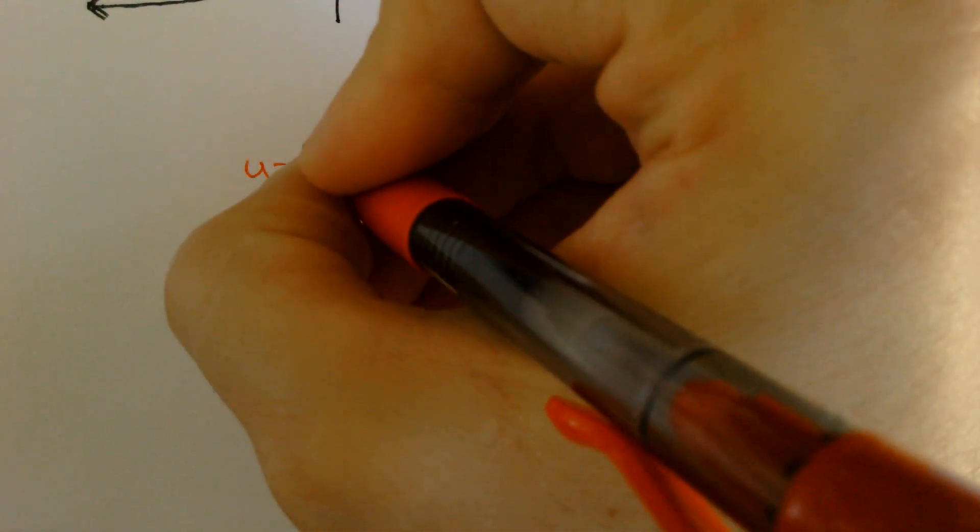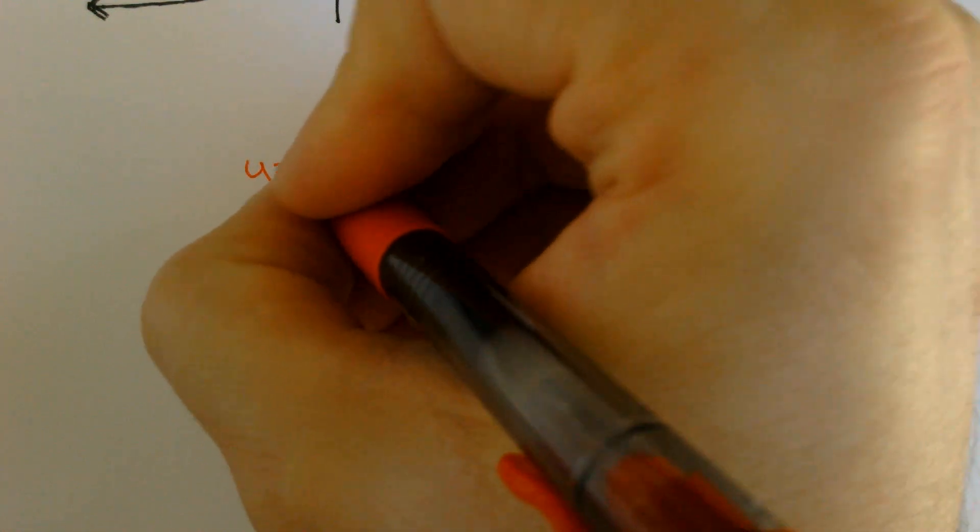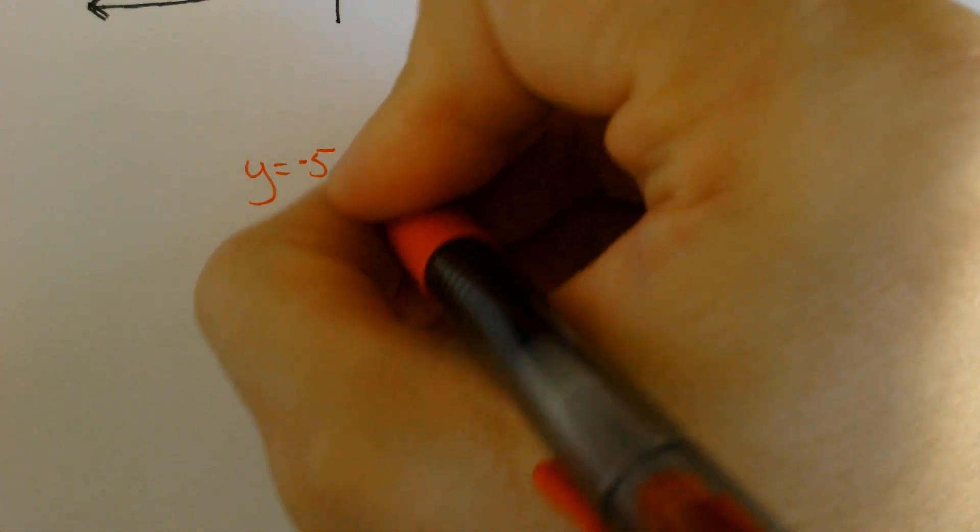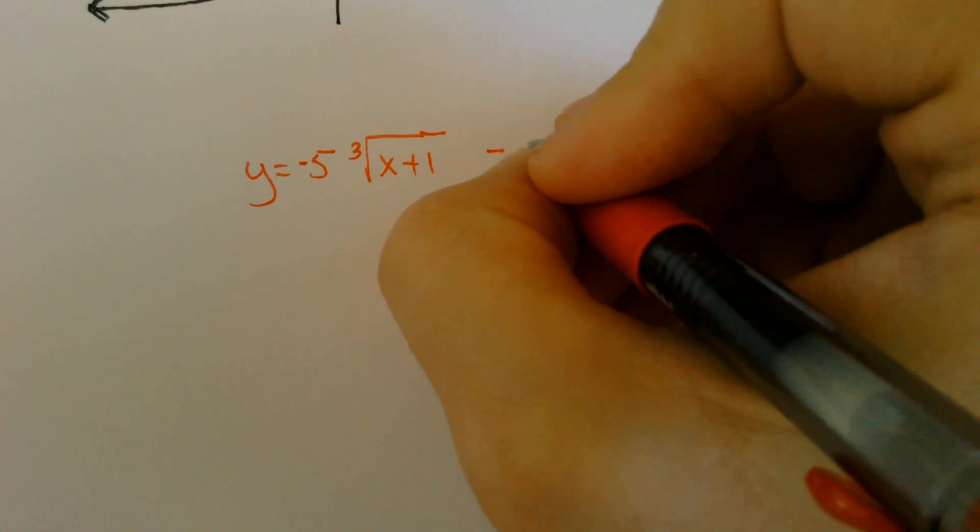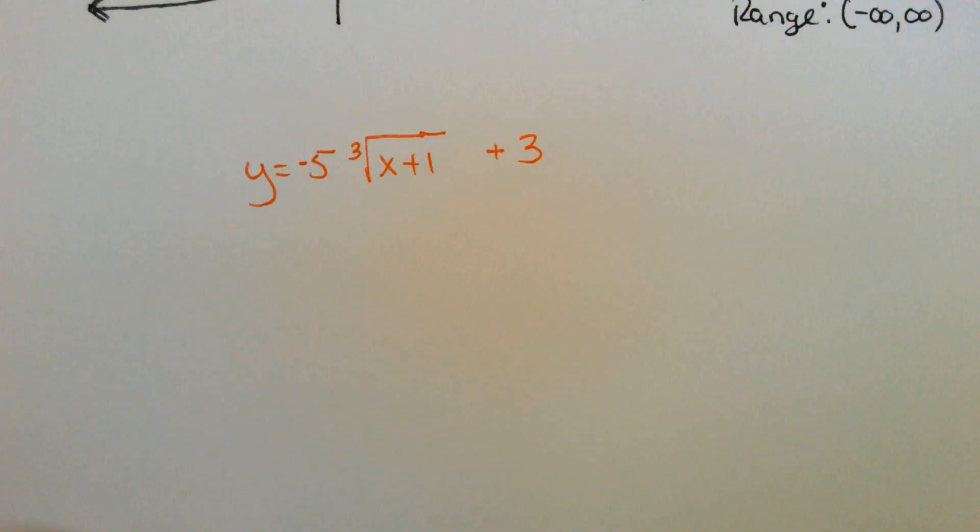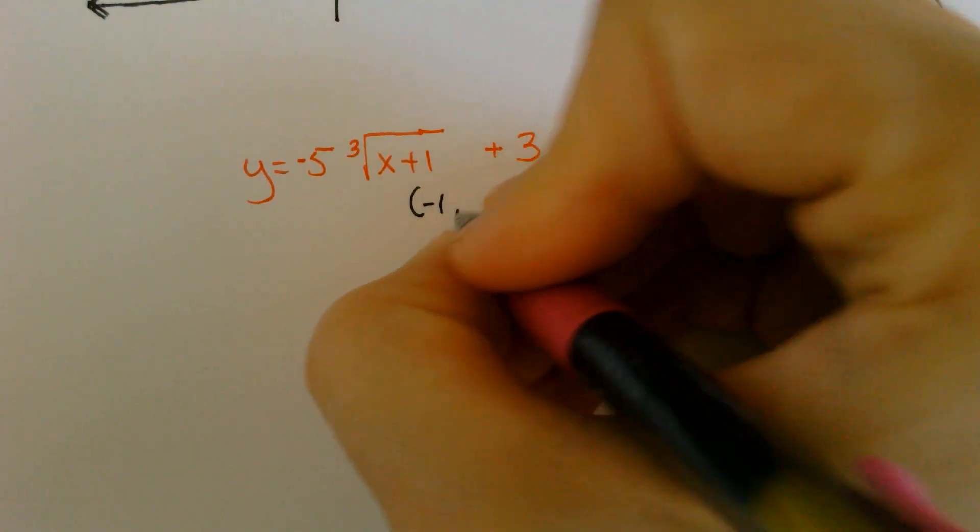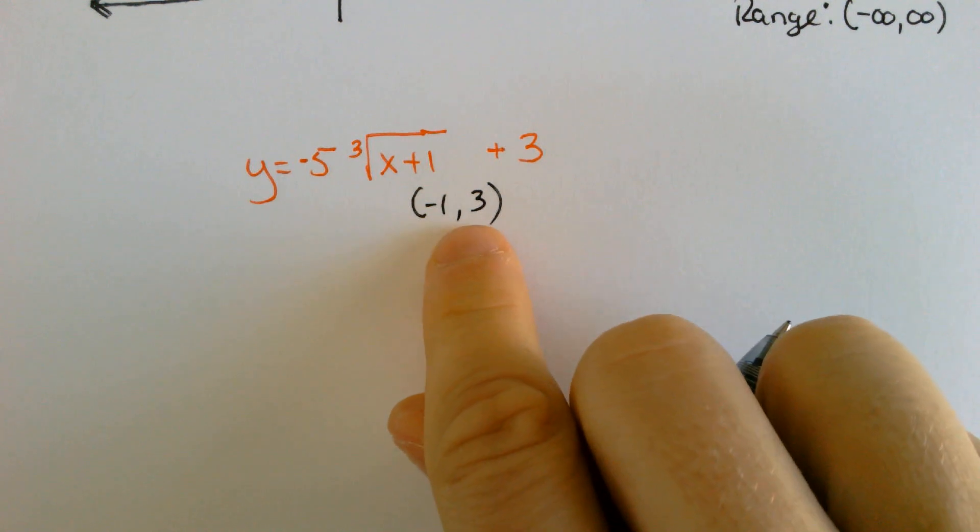Let's do one more cube root. Y equals, let's do a 5, negative 5, why not. Cube root of x plus 1 plus 3. Change the sign, keep the sign. Negative 1 comma 3. So we can plot that point to the left one and then up by 3.